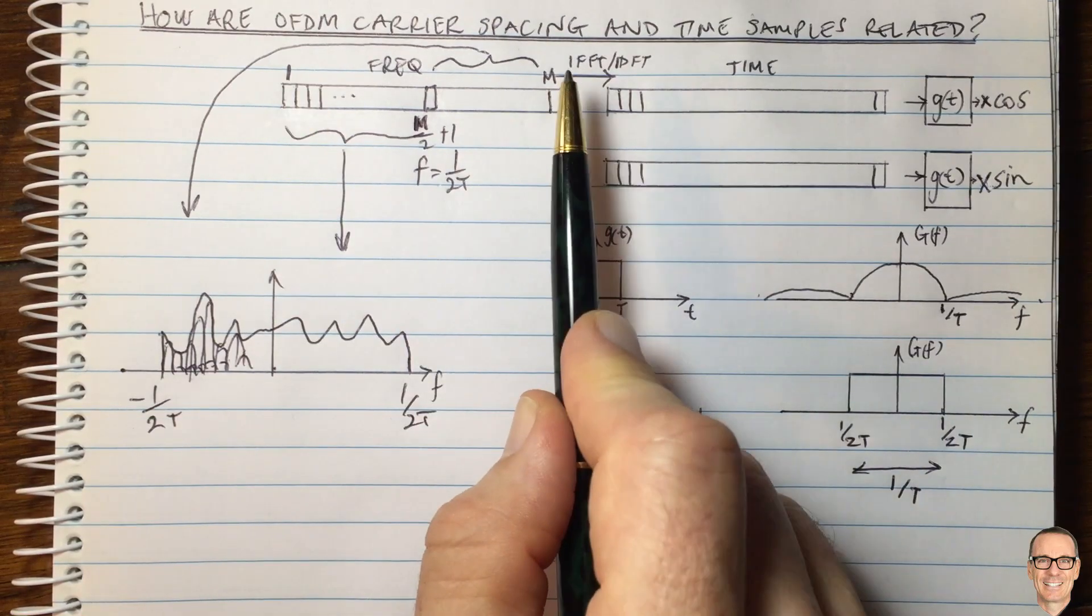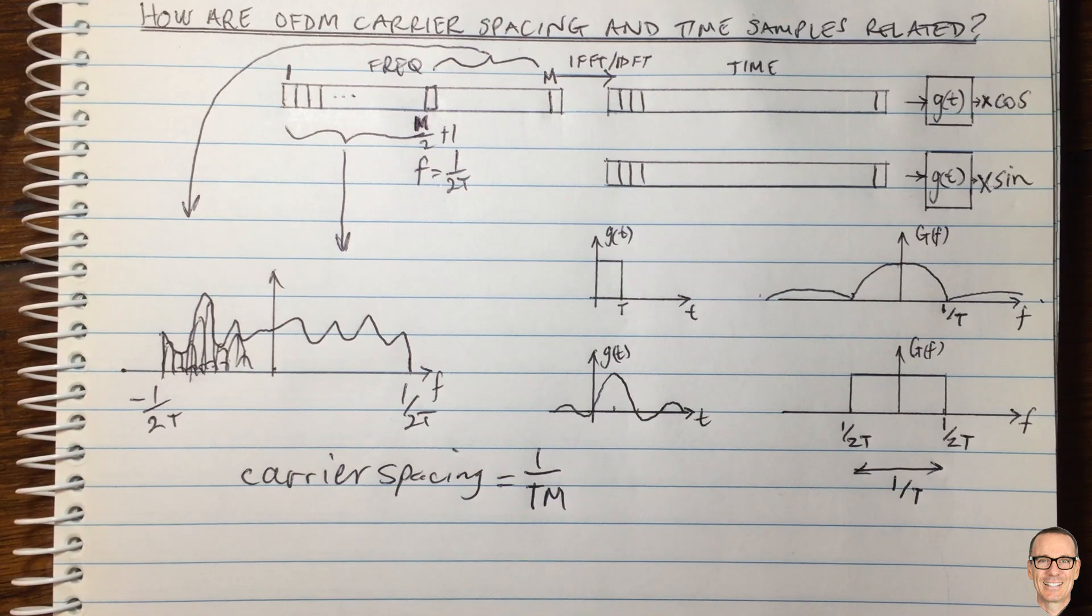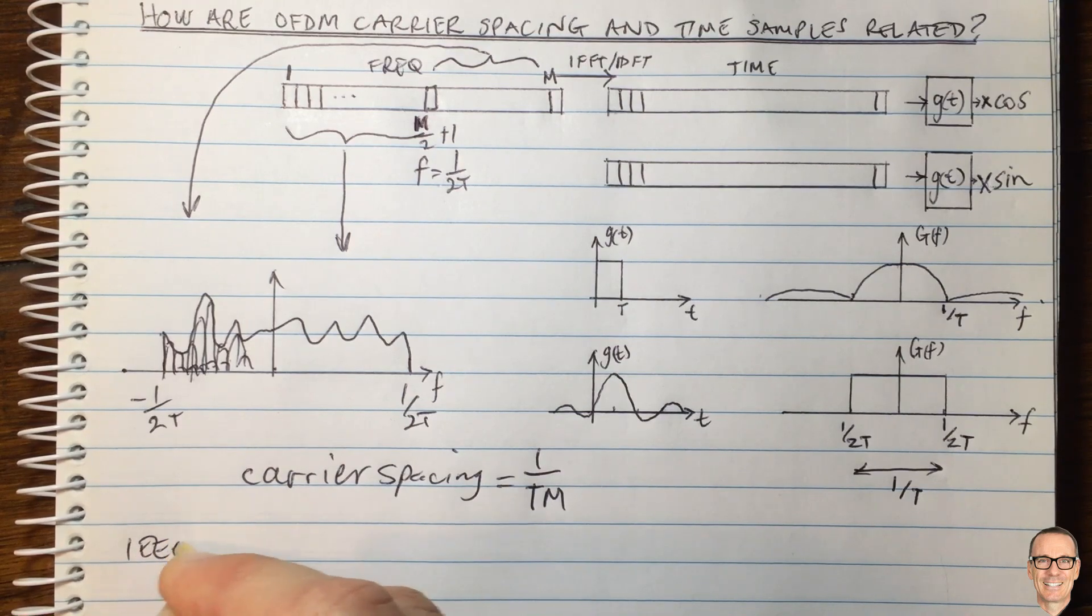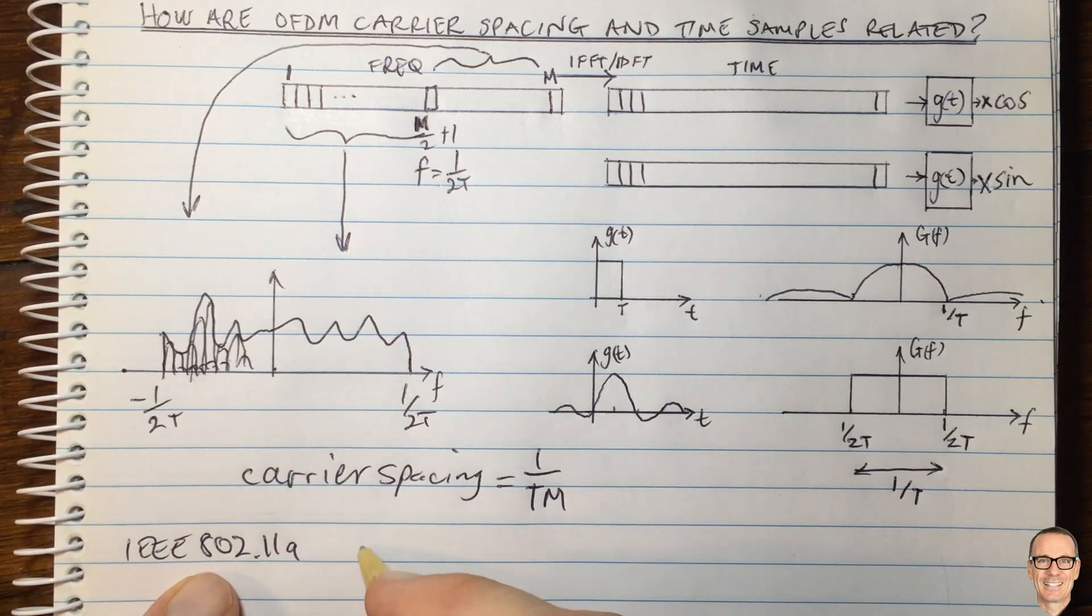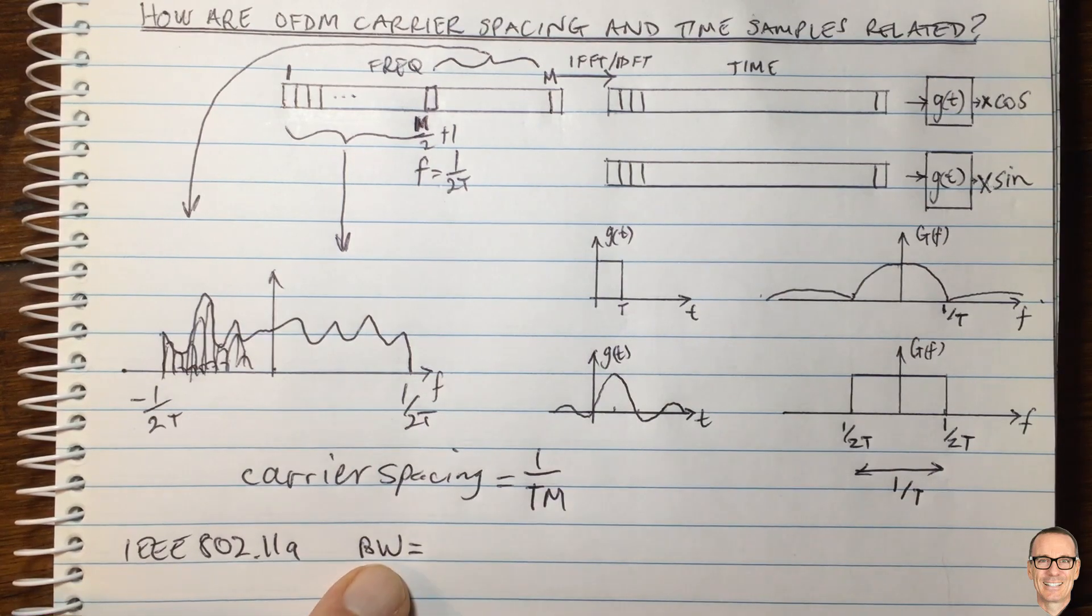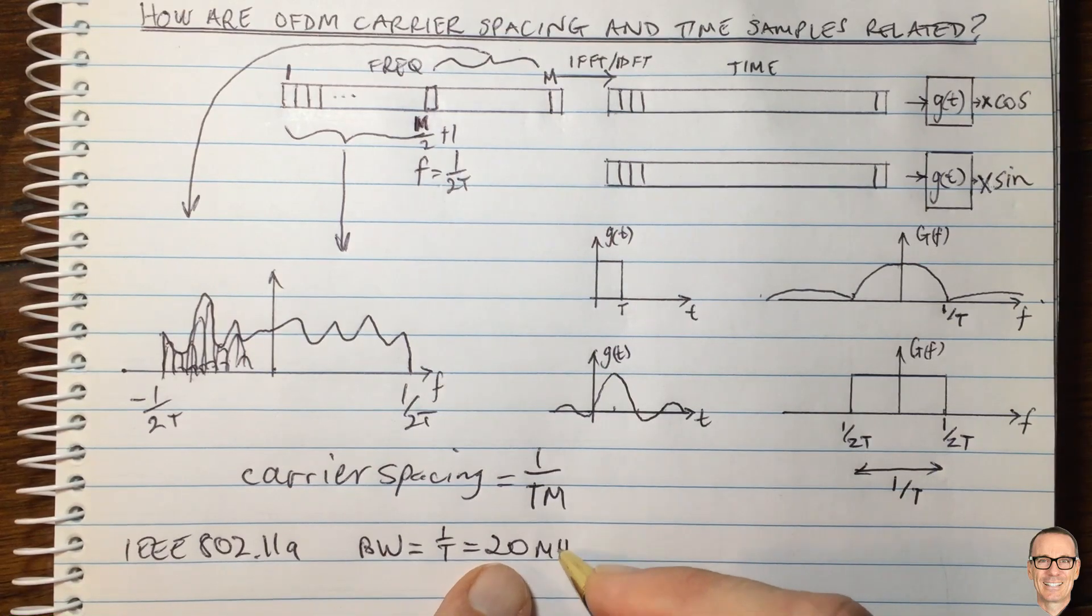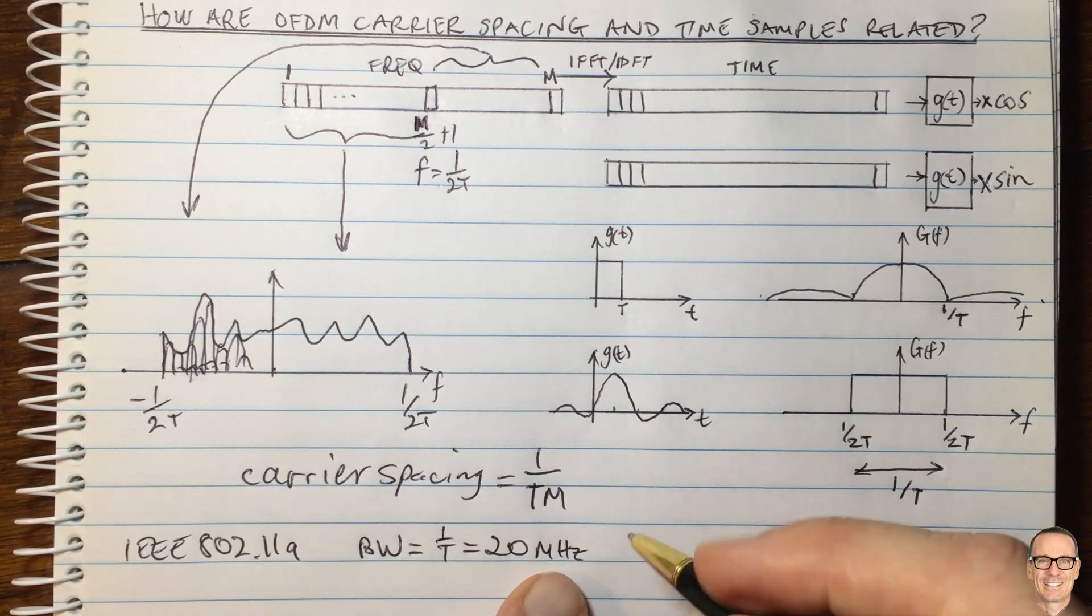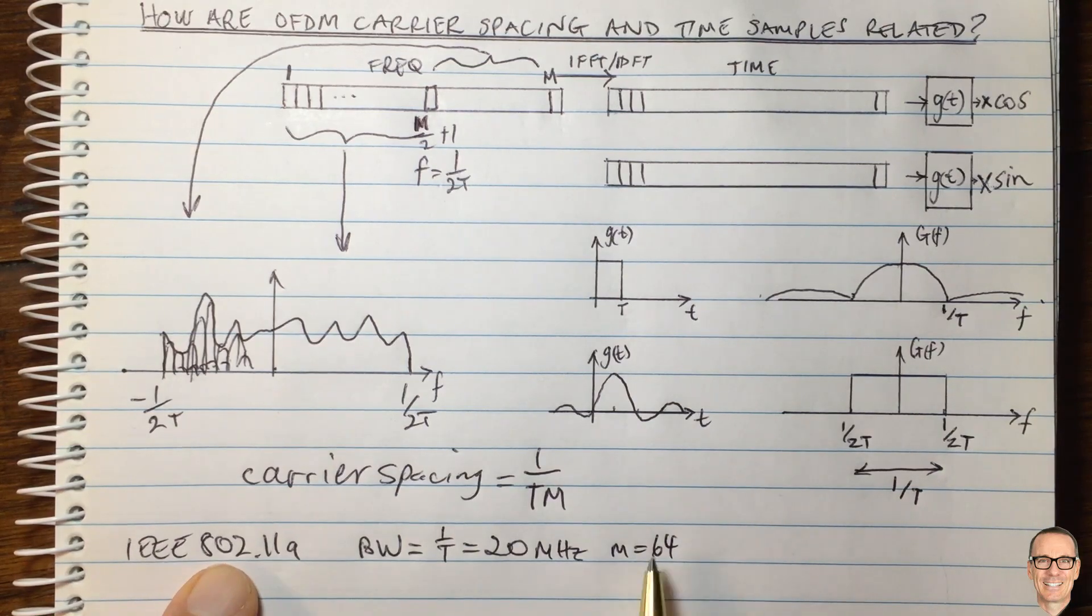If we look at a particular example of this, let's look at 802.11a, IEEE 802.11a. Then we have the bandwidth is equal to 1 divided by T, which equals, for 802.11a, equals 20 megahertz. We have M equals 64 in 802.11a. They use M equals 64.